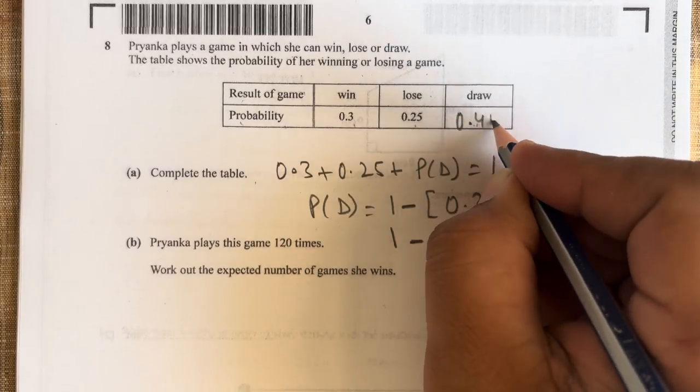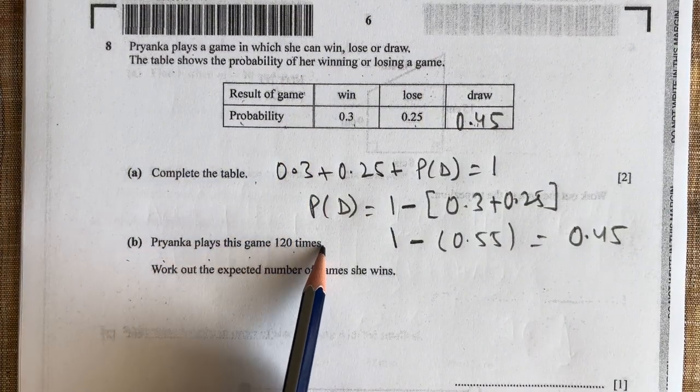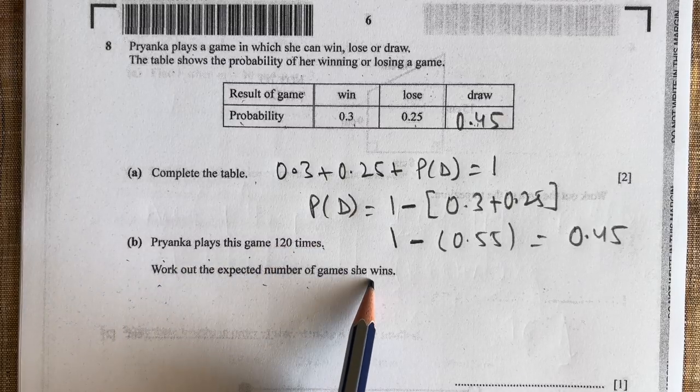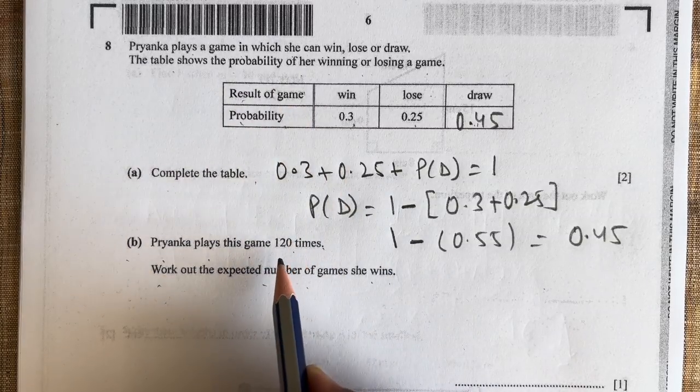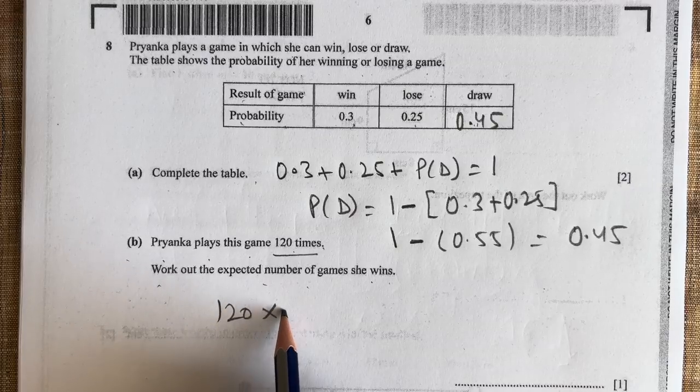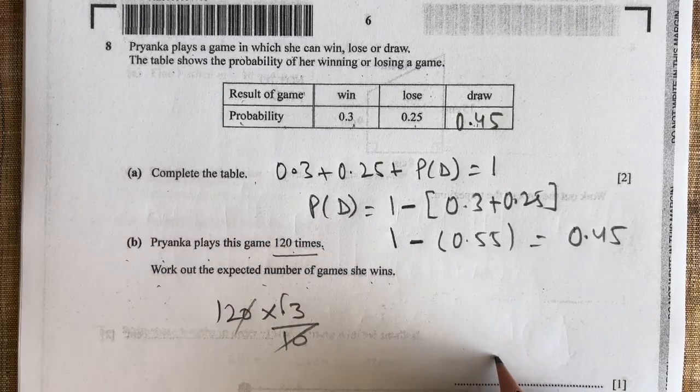Part b: Priyanka plays this game 120 times. Work out the expected number of games she wins. Probability of winning is 0.3, she played 120 times, so 120 × 0.3 = 36. 36 will be our answer.